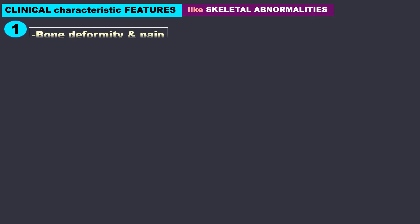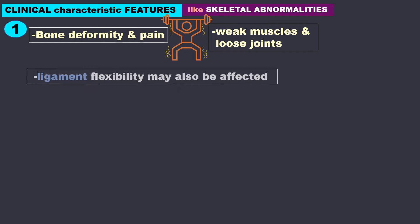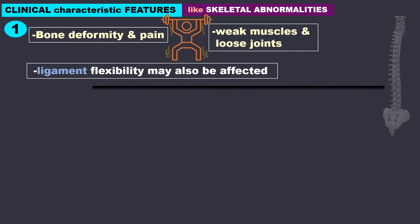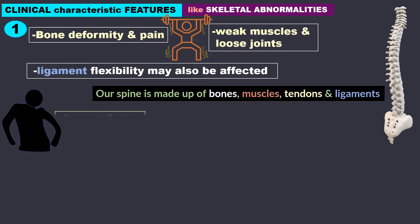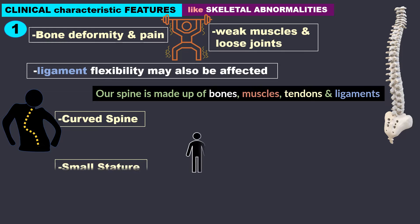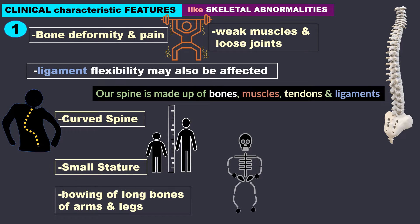Skeletal abnormalities include bone deformity and pain, weak muscles, and loose joints. Ligament flexibility may also be affected. The spine is made of bones, muscles, tendons, and ligaments, and defective formation of these leads to a curved spine and small stature. Apart from this, there could be bowing of the long bones of the arms and legs.